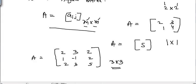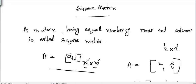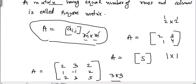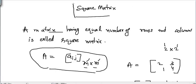That was just the definition of square matrix. I'll just repeat it: square matrix is a matrix having equal number of rows and columns. This is the mathematical representation of square matrix where aij is any element present at ith, jth location and its order is m cross m where m can be any natural number.